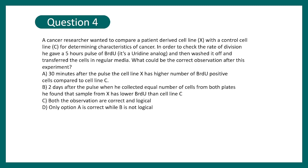Now question number four, a cancer researcher wanted to compare a patient derived cell line X with the control cell line which is C for determining the characteristics of the cancer. In order to check the rate of division he gave five hours of pulse of BrdU which is a uridine analog, and then he washed it off and transferred the cell in regular media. What would be the correct observation of this experiment?